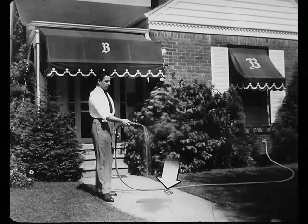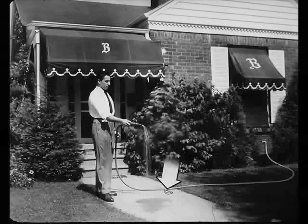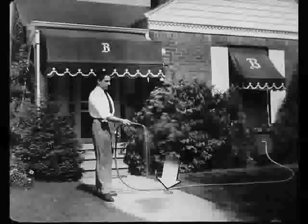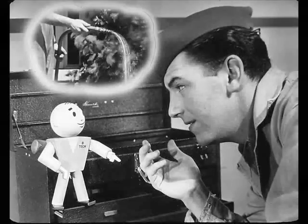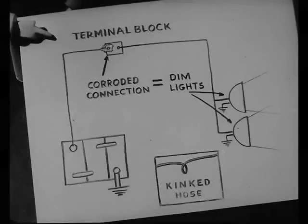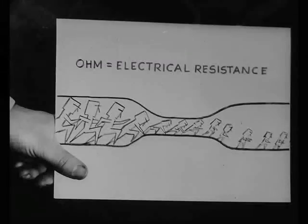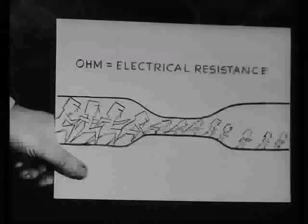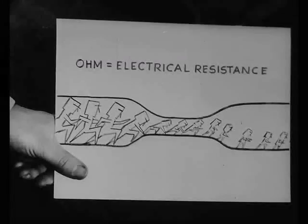There's another point too, Bill, that'll affect the flow of electricity. Suppose you get a kink in your garden hose while you're watering the lawn — what happens to the pressure at the nozzle? It falls to almost nothing. Exactly. That's because there's resistance to the flow of water through the hose. Now suppose you've got a corroded connection. That corrosion sets up a resistance to the flow of electricity, and the unit that's fed through that wire doesn't get enough current to make it operate. Of course, resistance will weaken the voltage, and therefore can be measured.